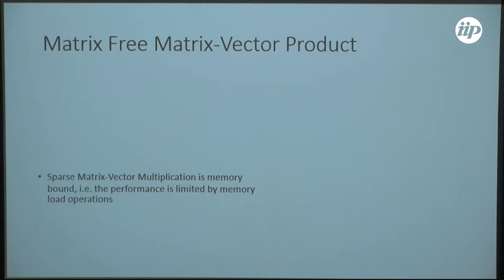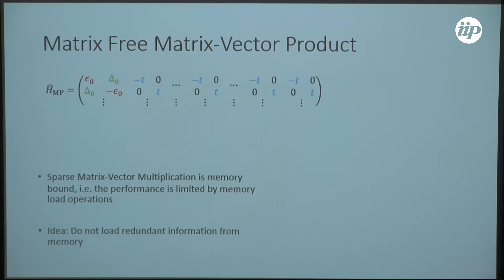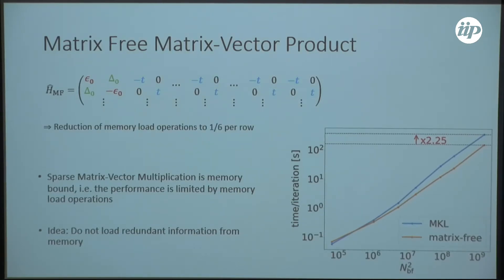There is another very important optimization that works for various sparse matrices. Sparse matrix-vector multiplication is a memory-bound operation — performance is limited by how much data we can get into our registers, so we want to avoid loading redundant information. If we look at our matrix, we have a lot of redundant information: all the hoppings are the same, and also delta for the particle and hole states is the same at the first site, and the on-site energies. So we only need to load each of these once. Actually we only need one-sixth of the load operations, and our code works more than twice as fast with this matrix-free approach compared to conventional sparse matrix methods.